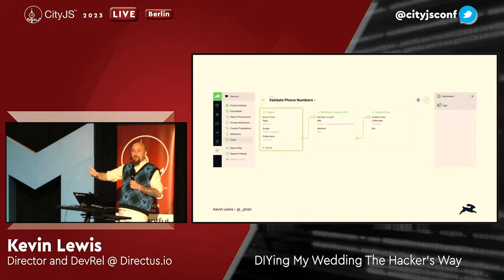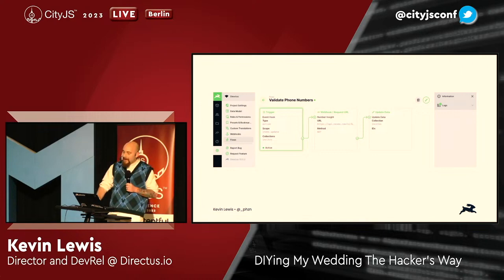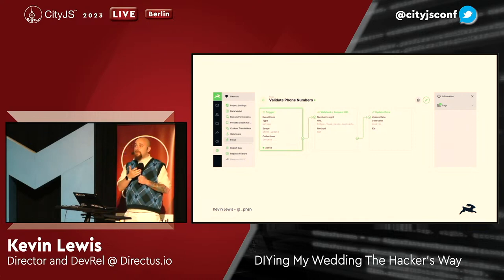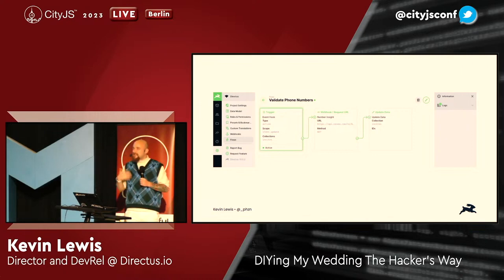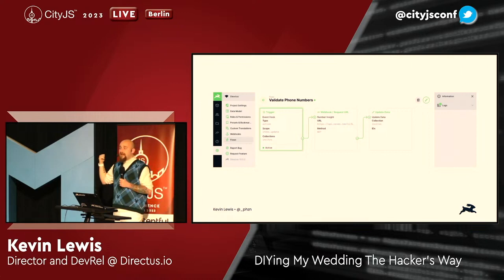The really cool thing about this is the other approach would have been to push people into external platforms and handle messaging from there. But because this is directly linked with the database, the moment someone RSVPs they're included in the distribution list. And as people were telling us closer to the time that they couldn't make it, we update their data in the database and then they don't get further email blasts.